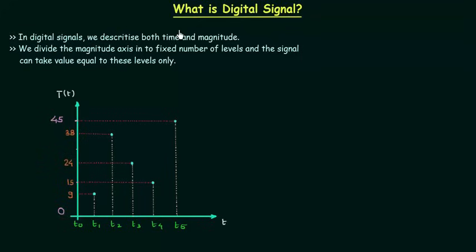In the last presentation we completed analog and discrete time signals. In this lecture we will study digital signals. In digital signals we discretize both time and magnitude. If you remember discrete time signals, we discretize the time axis but not the magnitude. But in the case of digital signals, we have to discretize the magnitude axis as well.